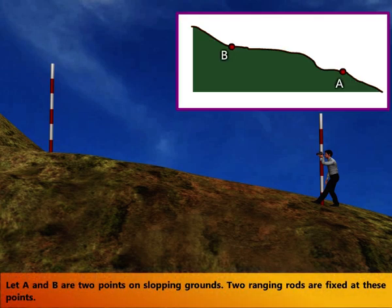Let A and B are two points on sloping grounds. Two ranging rods are fixed at these points.